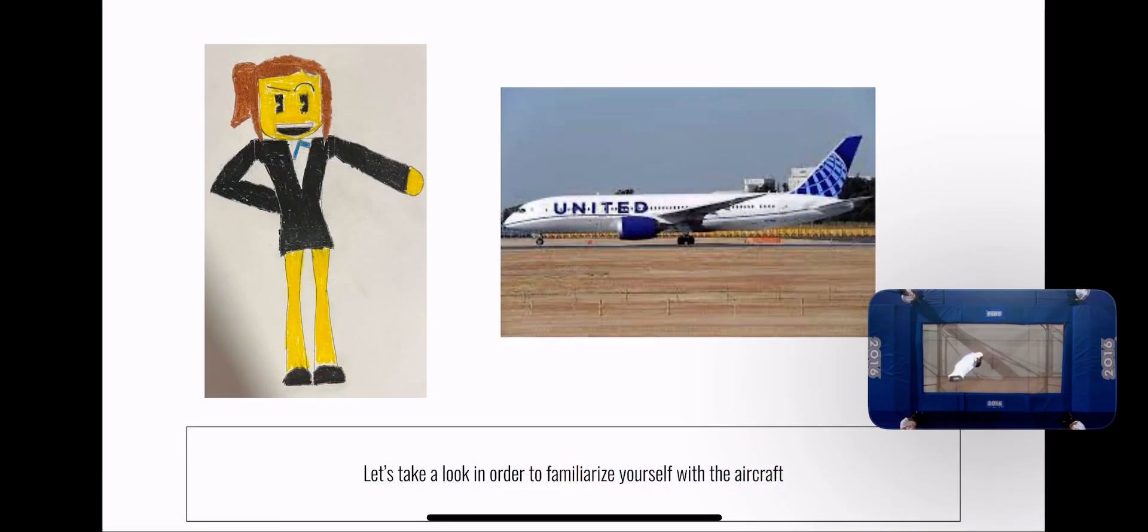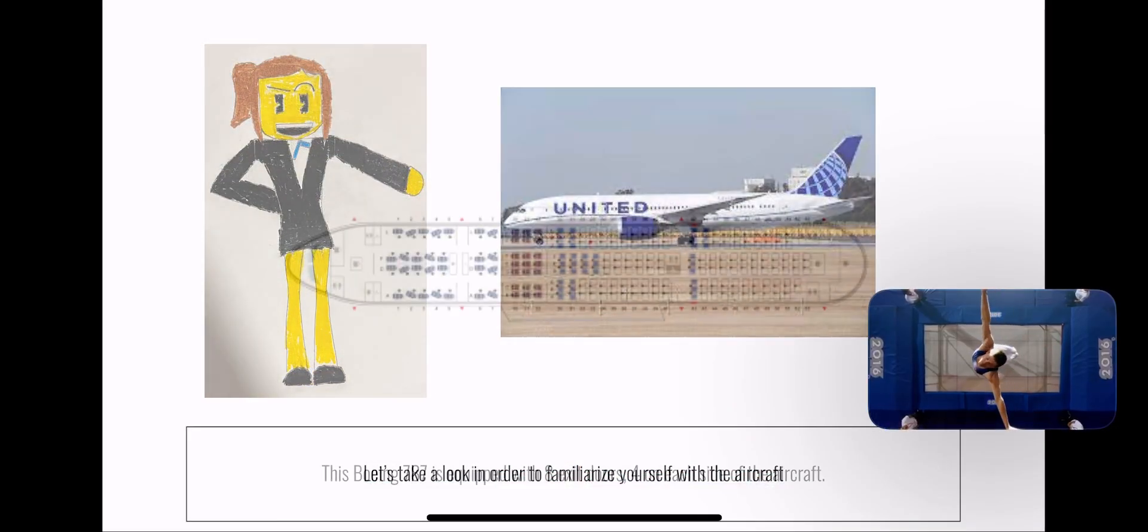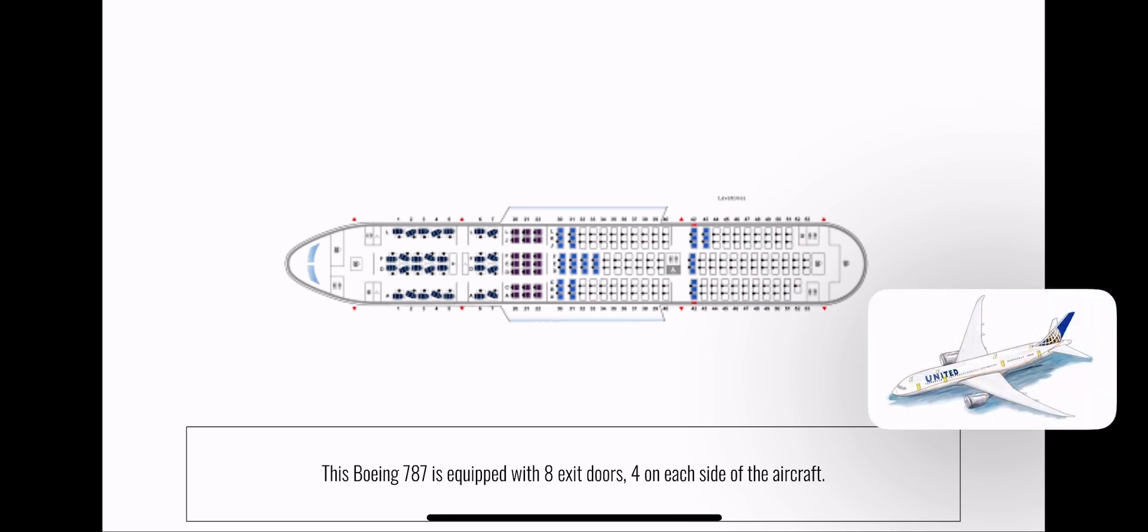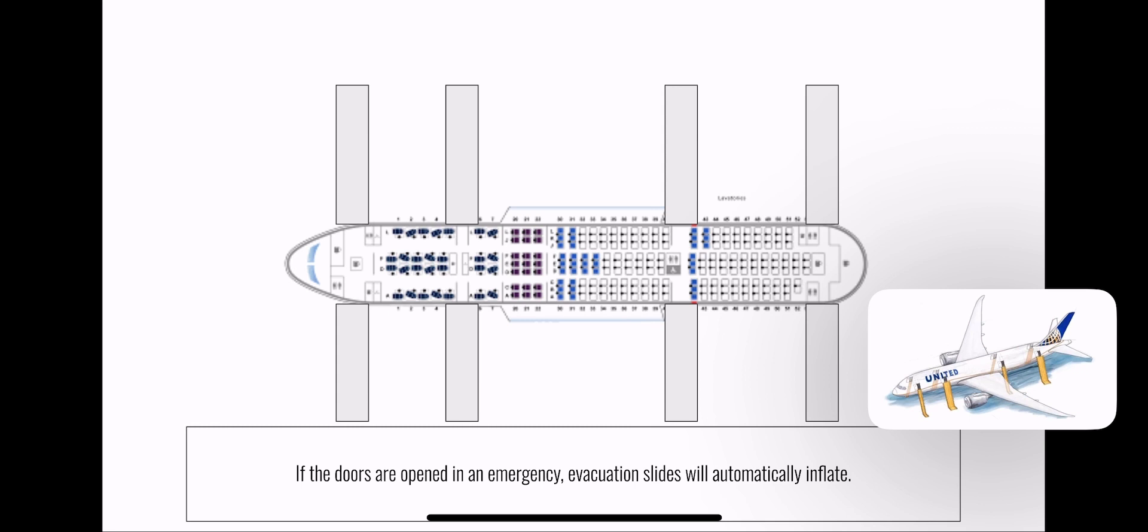Please take a moment to look around to familiarize yourself with the aircraft. This Boeing 787 has eight exit doors, four on each side of the aircraft. If the doors are opened in an emergency, slide rafts will automatically inflate.